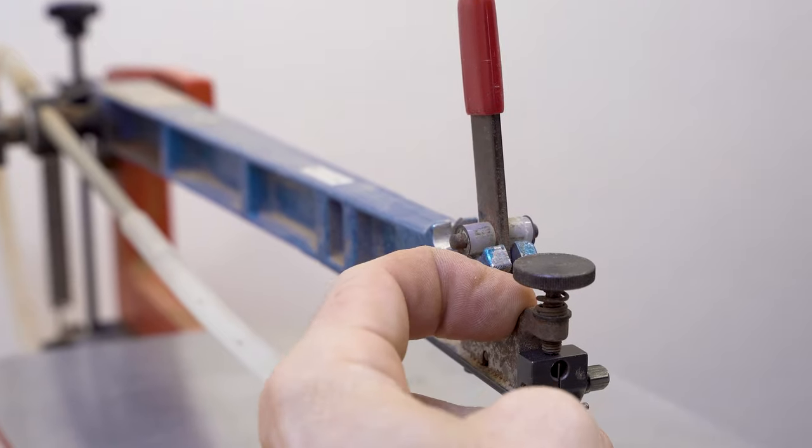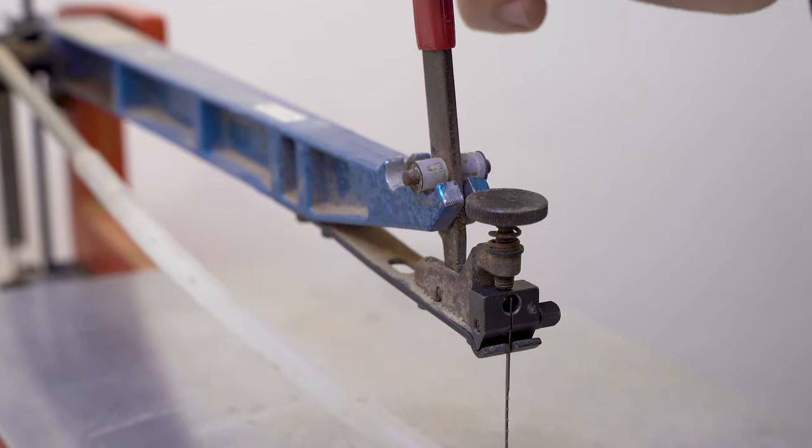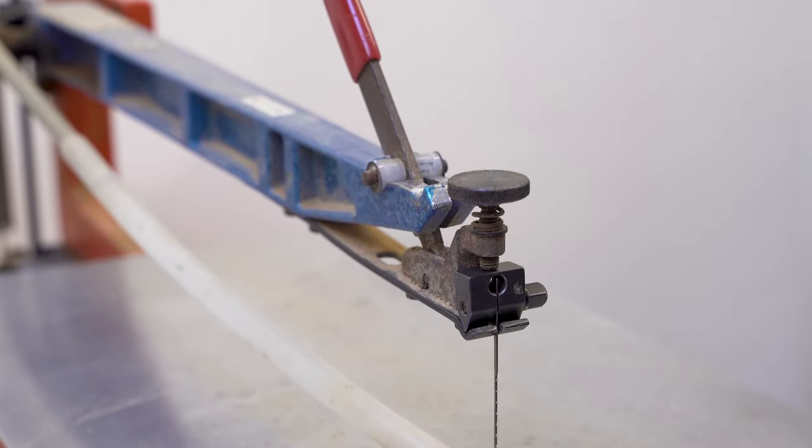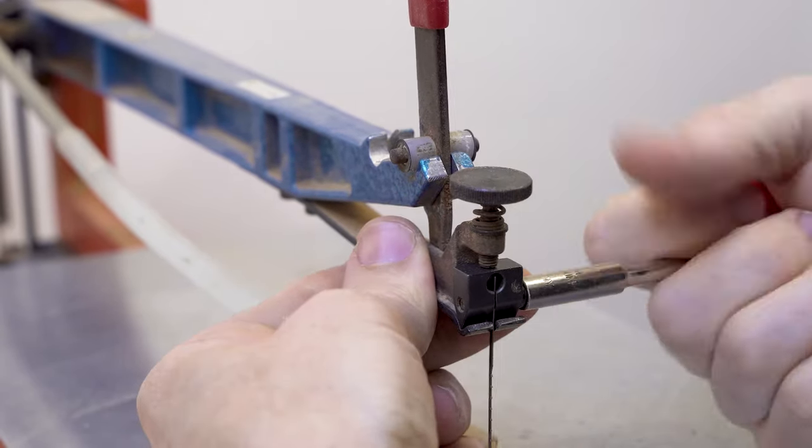When you buy a Hegner scroll saw, it comes with a standard clamp that can be tightened and loosened to put the blade in and release it using the spanner.